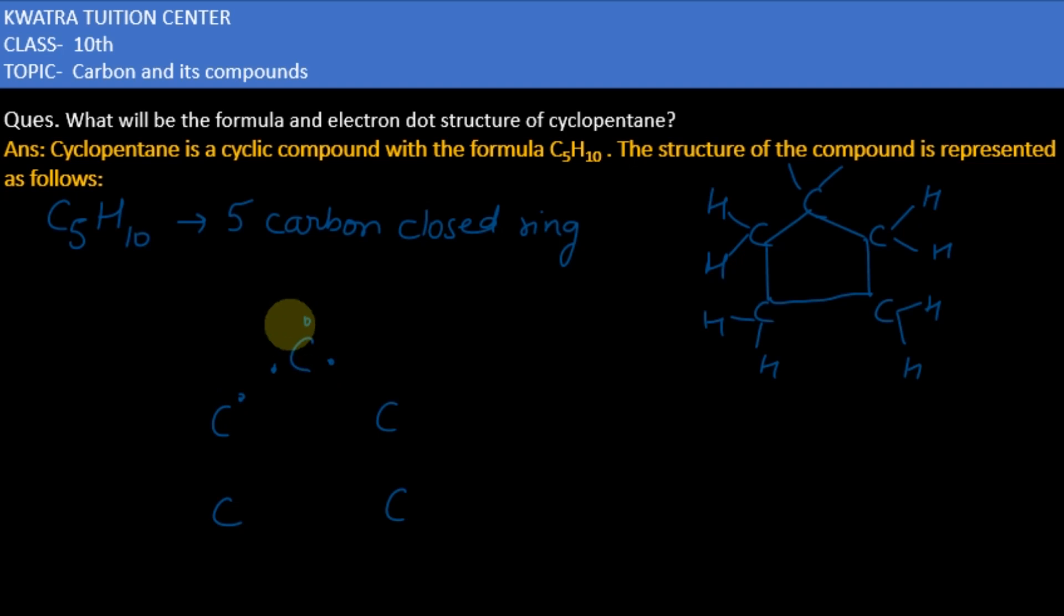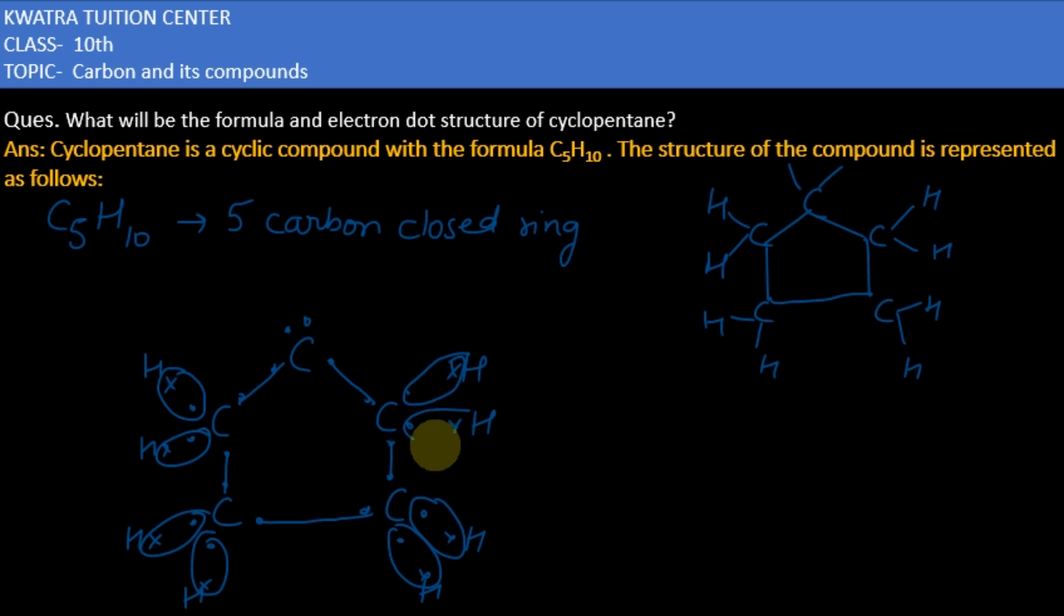Let's arrange them. The electrons in carbon will attach to hydrogen atoms, completing the structure. This is the electron dot structure of cyclopentane.